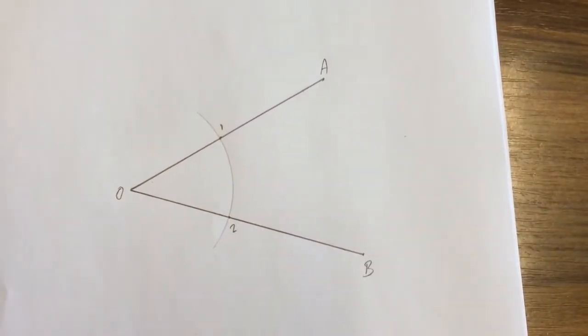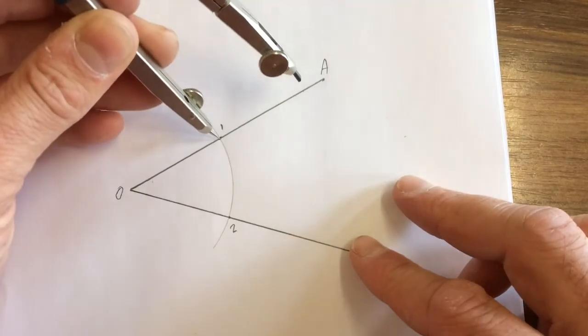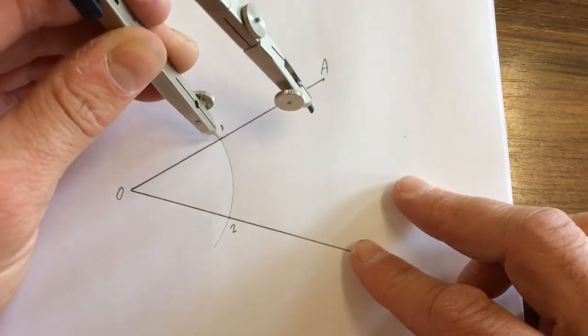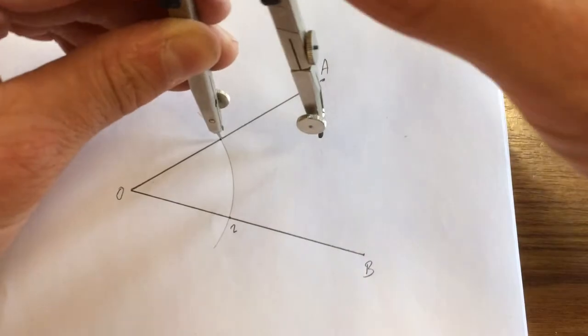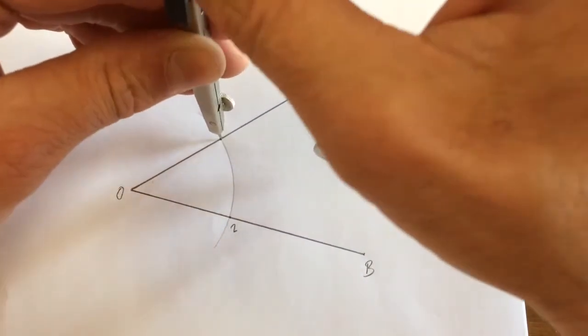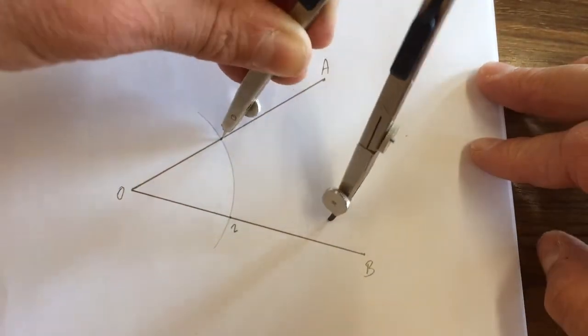Now the next step is to get your compass and place your compass point at location one. You can either leave your compass at the same radius or you can make it longer. I'm going to make it a little bit longer and swing an arc somewhere in the middle.